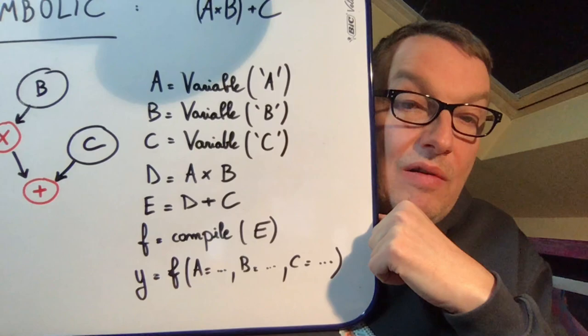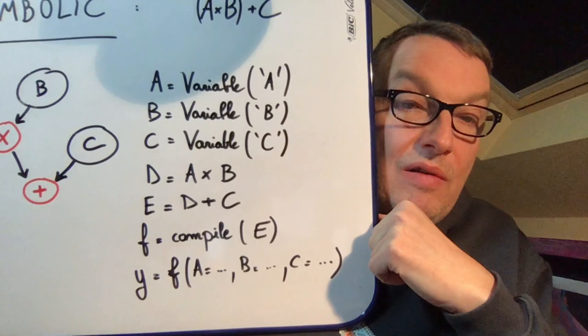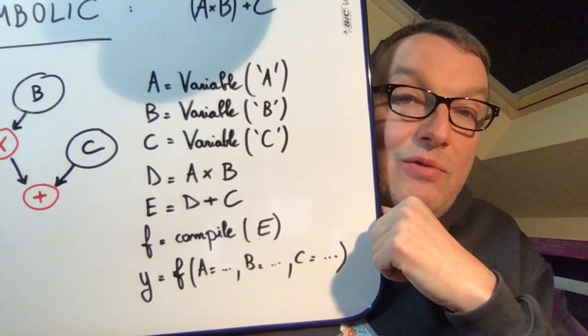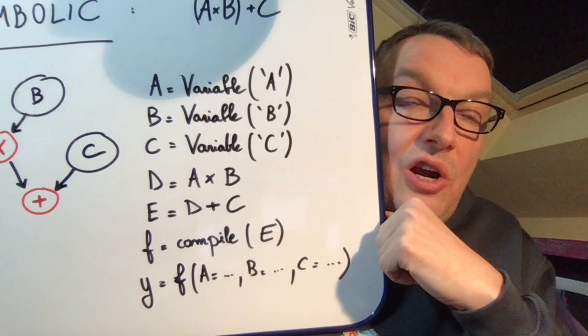We could then apply it to actual values for A, B, and C. So we would invoke F, passing values for A, B, C, and that would give us our result, let's call it Y. So we can clearly see here why this programming model is called define-then-run.